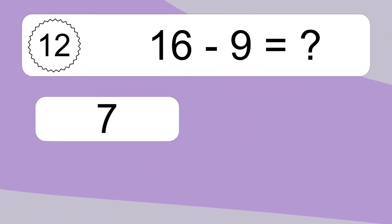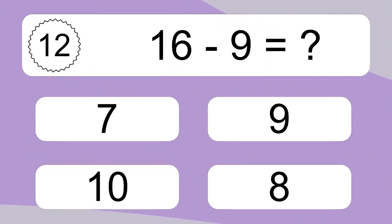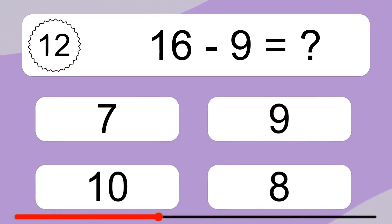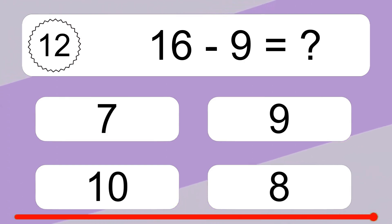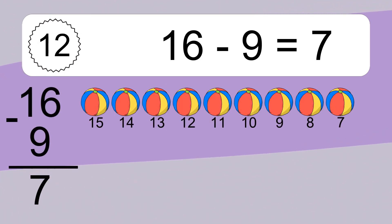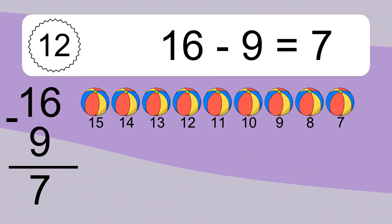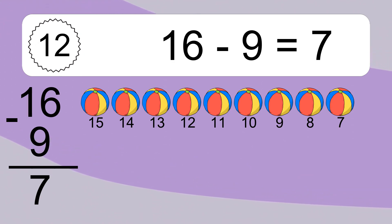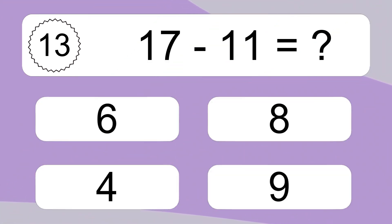16 minus 9 equals what? 16 minus 9 equals 7. Let's count it: 15, 14, 13, 12, 11, 10, 9, 8, 7.